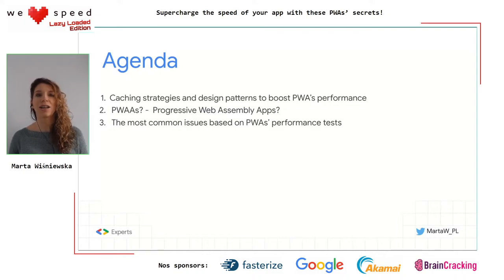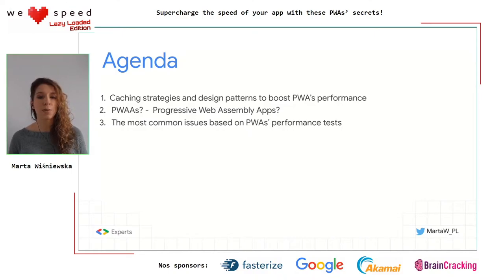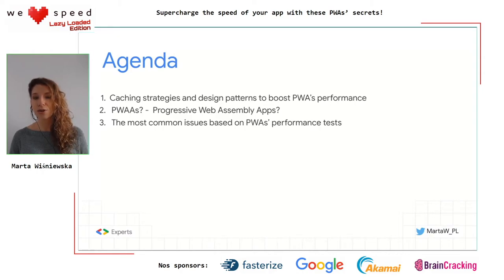Let's take a look at the agenda. I will start with caching strategies and design patterns to boost progressive web app performance. Then I will tell you about the combination of progressive web apps with WebAssembly. At the end, I will tell you about my performance experiments that I did on 15 progressive web apps already in production — the most common issues and tips on how you can avoid them.